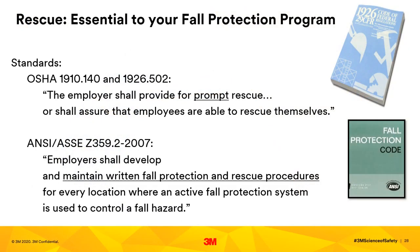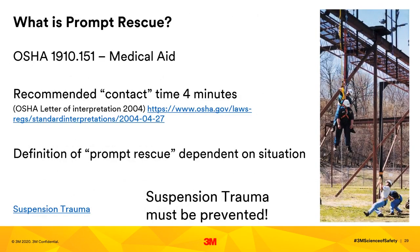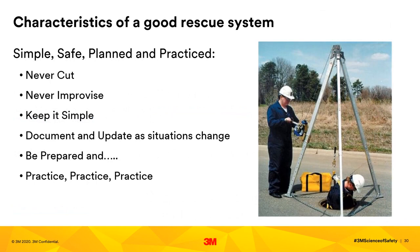OSHA states that the employer shall provide prompt rescue or shall assure that employees are able to self-rescue. ANSI states that employees shall develop and maintain a written rescue procedure for every location where an active fall protection system is being used. This means you should have a rescue plan and practice that plan. Prompt rescue must take place within six minutes, though every rescue situation is dependent on location and environment. OSHA 1910.151 suggests that medical aid should be rendered within four to fifteen minutes — if potentially life-threatening, then four minutes. Suspension trauma is considered life-threatening. When providing rescue, keep it simple, safe, and planned.